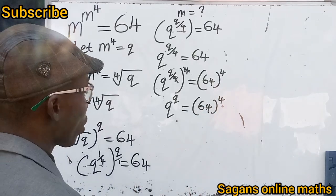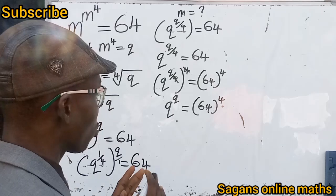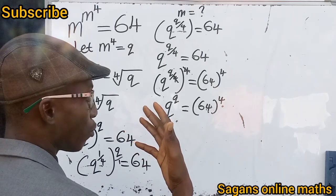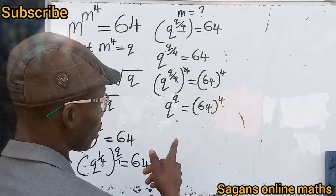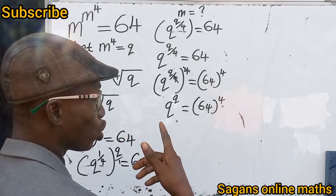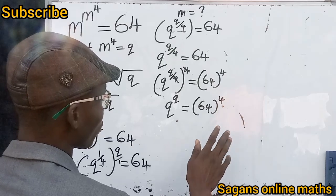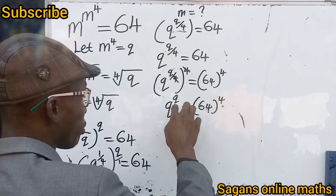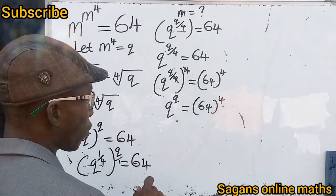From here we could take the log of both sides, but we won't stress ourselves. We know that 64 equals 8 squared, since 8 times 8 is 64. We also know that 2 raised to the power of 6 is 64. But we are not using 2^6 because our left-hand side has q raised to the power of q — the base and power must be equal.